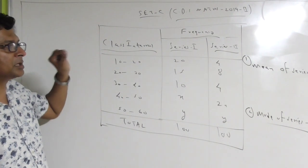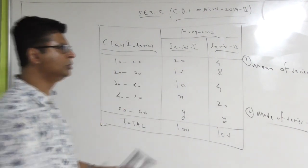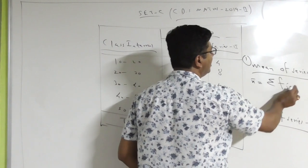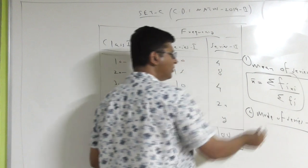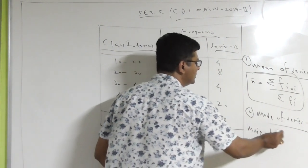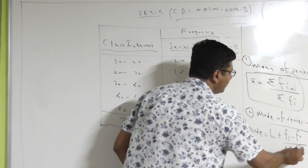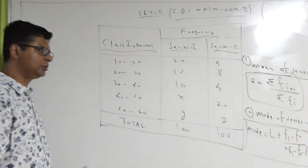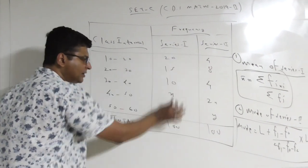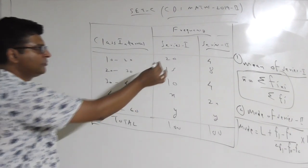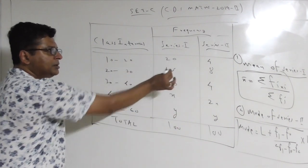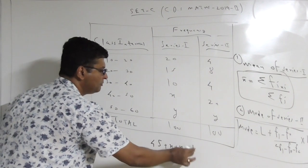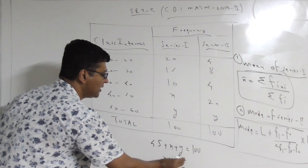What you have to do exactly is first find X and Y. If you find X and Y, then you can easily find the mean and mode using formulas: X̄ = ΣfᵢXᵢ / Σfᵢ, and for mode: L + (f₁ - f₀)/(2f₁ - f₀ - f₂) × h. Since the total frequency = 100: adding series 1 frequencies — 20 + 10 + 15 + X + Y = 100, giving X + Y = 55. This is equation 1.